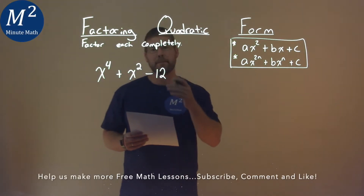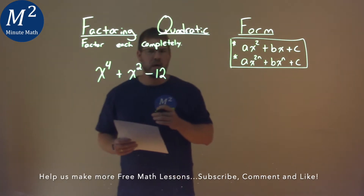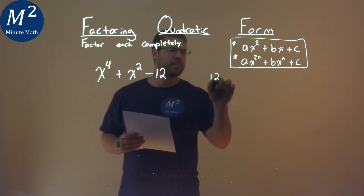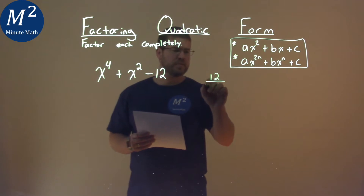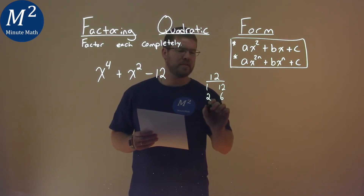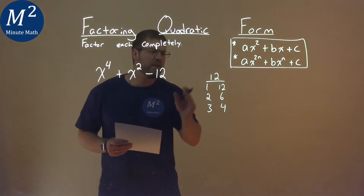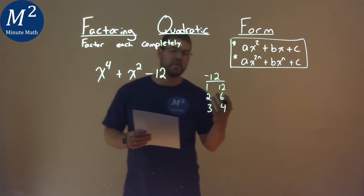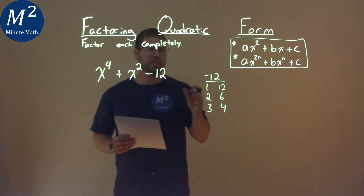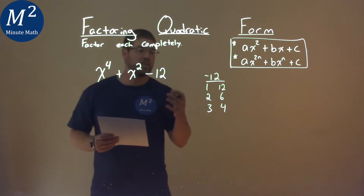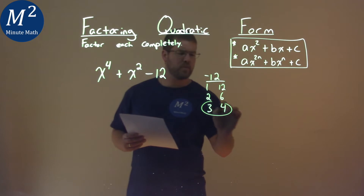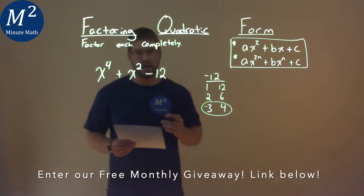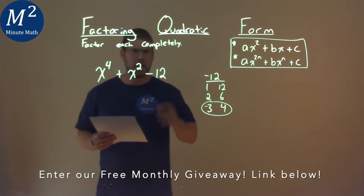We're given this problem right here: x to the fourth power plus x squared minus 12, and we need to factor completely. Notice it's kind of in a quadratic form. We want to take our c value, that 12, and we find what two numbers multiply to be the 12. Well, it's 1 and 12, 2 and 6, and 3 and 4. Now, one of each one of these pairs has to be negative because it's a negative 12. We then look at our b value and see which ones added together give a positive 1. That's a 3 and a 4. If the 3 is negative and the 4 is positive, negative 3 times 4 is a negative 12, but we add the two together, we get the 1.